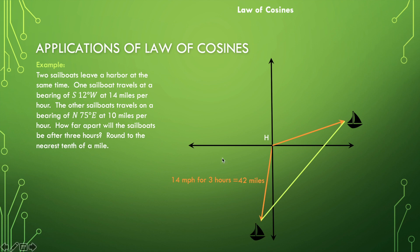Similarly, when we're talking about this sailboat over here, we know the boat has traveled 10 miles per hour for three hours. So 10 miles for each hour, and there's three of those hours, giving us 30 miles. So this length of our triangle is 42 miles and this length is 30 miles, and we need this.